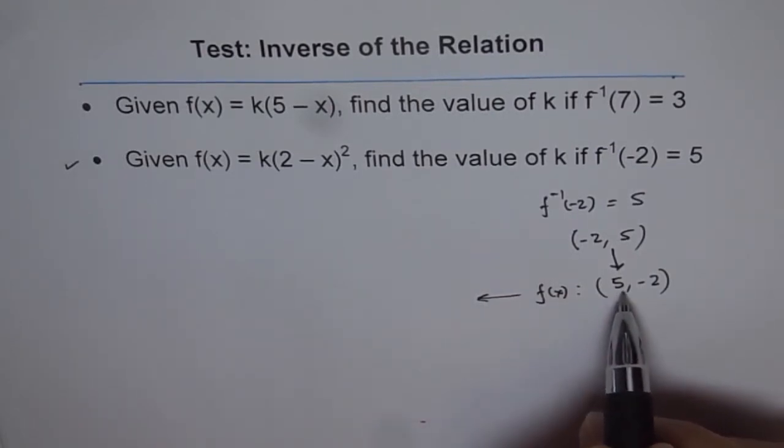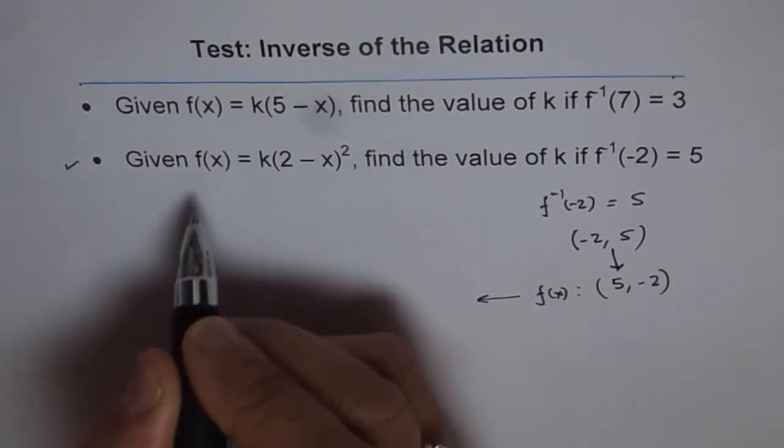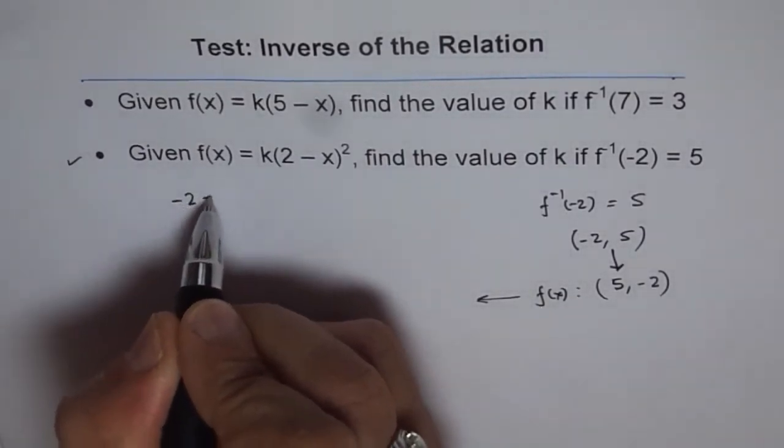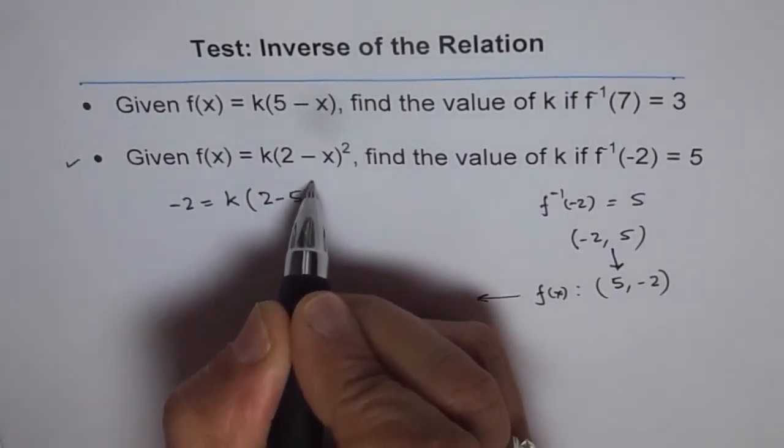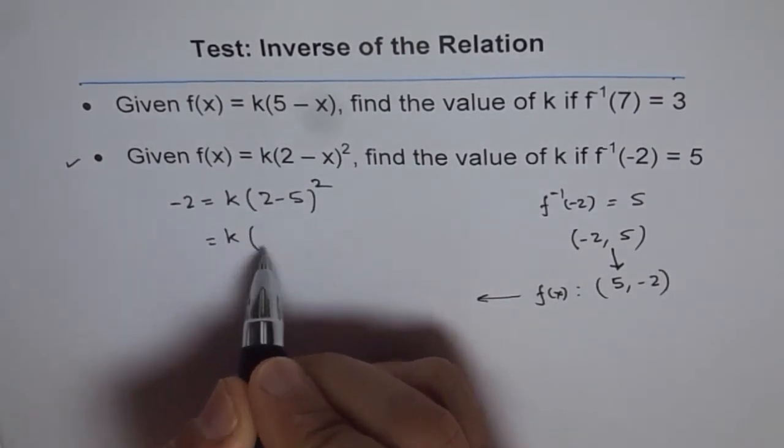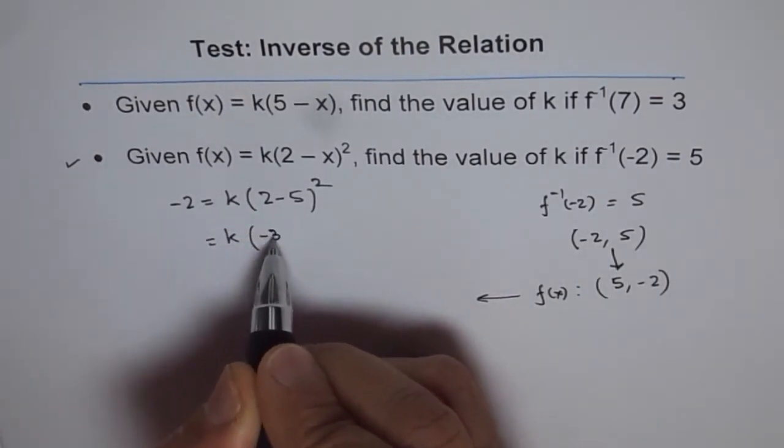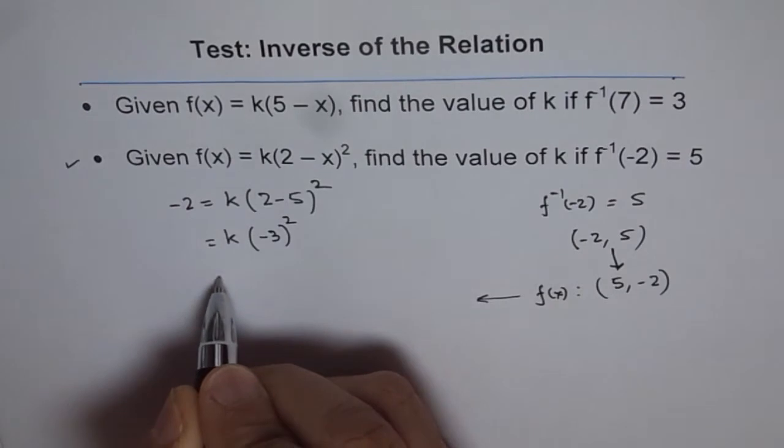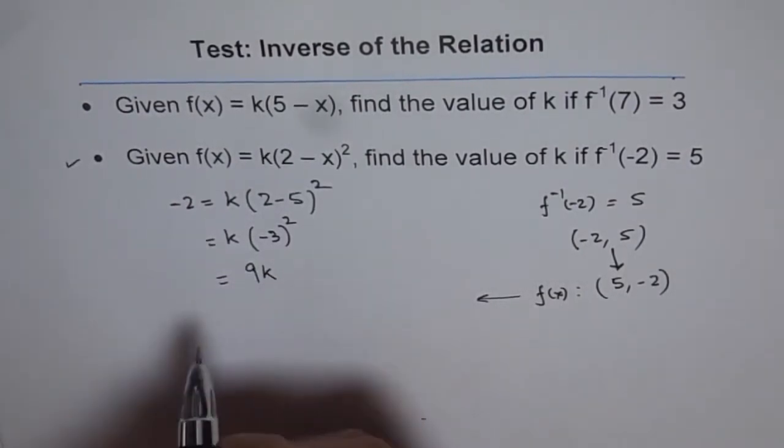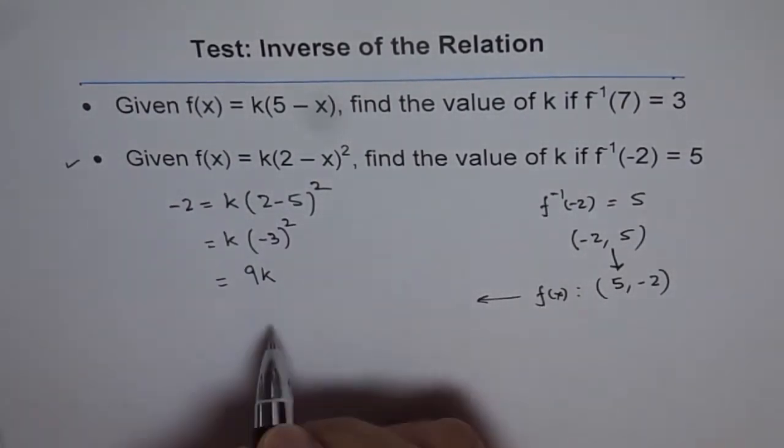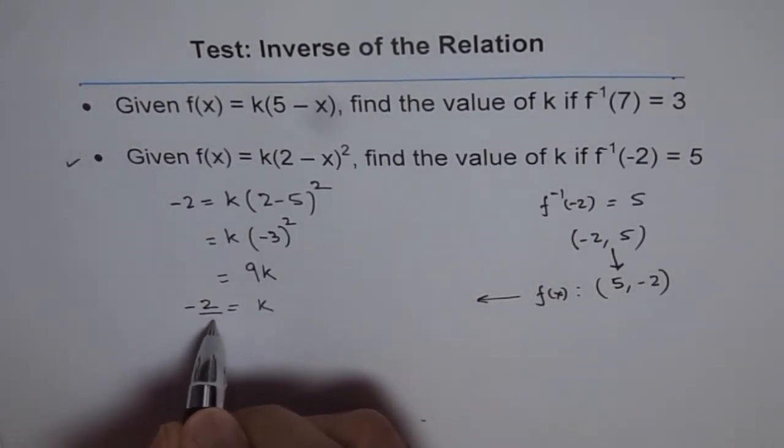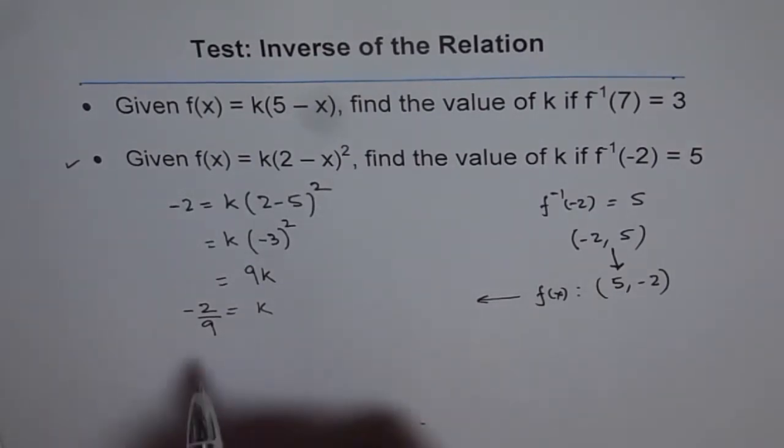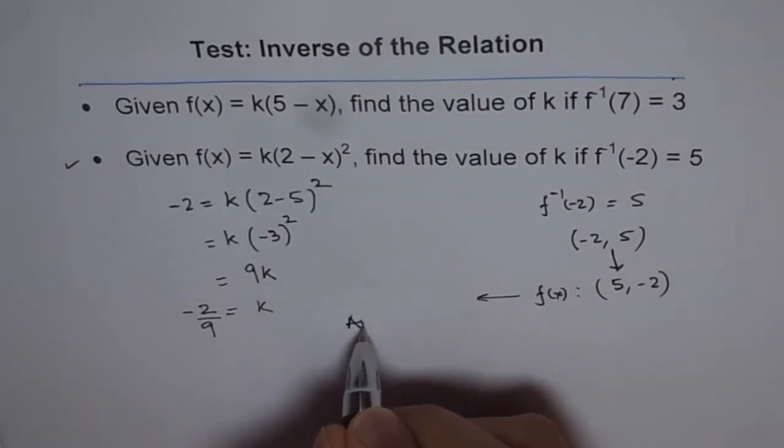Let's plug it in. So we get -2 equals k times (2-5) whole squared. And that gives you k times (2-5 is -3) whole squared. That is 3 squared is 9. So we get 9k equals -2, and therefore k equals -2 over 9. So that is how we find our answer. And so we say answer is k equals -2/9.